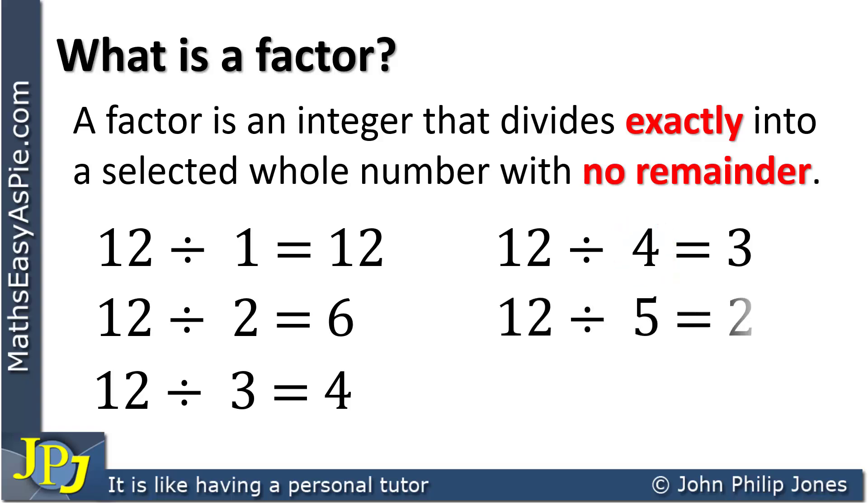Now you can see I'm dividing by 5 and this goes twice with a remainder of 2. The fact that there is a remainder means that 5 is not a factor of 12.